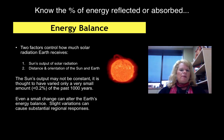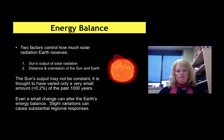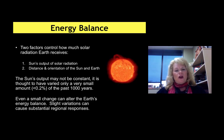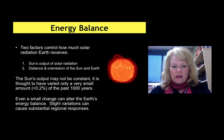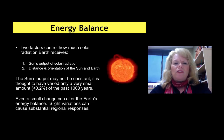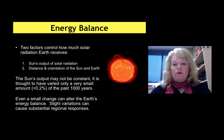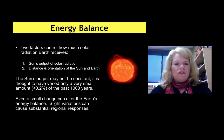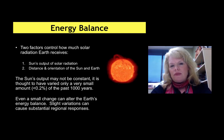Talking more about energy balances: two factors control how much solar radiation the Earth receives. Number one is the sun's output of solar radiation, and two is the distance and orientation of the sun and the Earth. The sun's output may not be constant, but it's thought to have only varied a very small percentage over the past millennium. So that small percentage is not what's causing these big climatic shifts. However, even a small change in the sun's output can actually alter the Earth's energy balance considerably, having substantial regional responses across the globe.